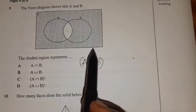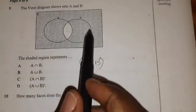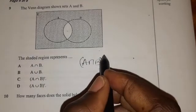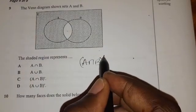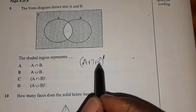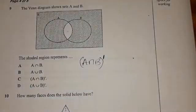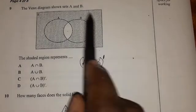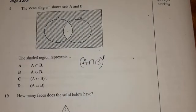But because this part is not shaded, it means they have shaded elsewhere. They have shaded every part other than this, so meaning A intersect B complement. They have shaded everywhere except for this. A intersect B complement.